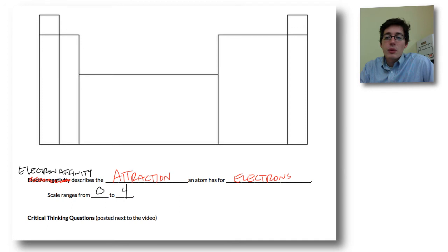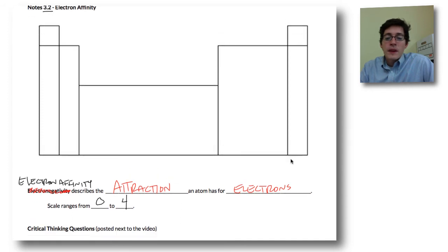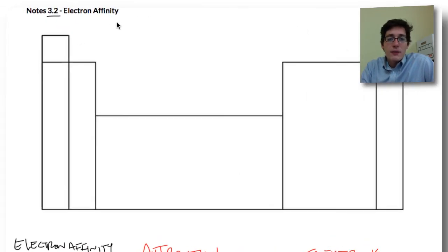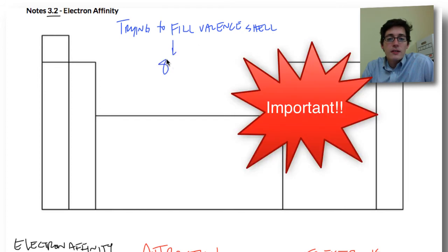The first thing we need to point out is that these atoms are trying to fill their valence shell. Any valence shell is going to have eight electrons, 8e⁻ (e minus means electron), and this is called the octet rule.